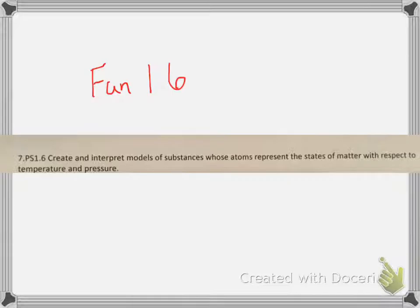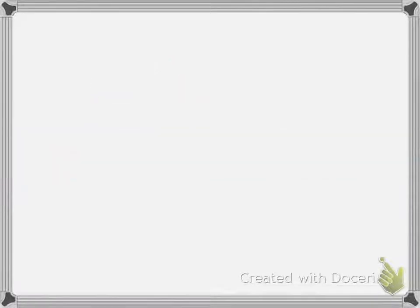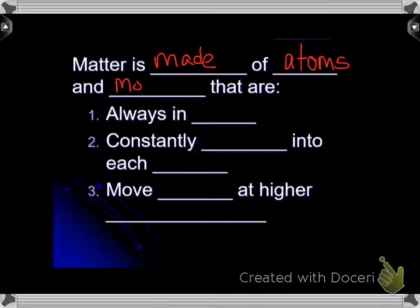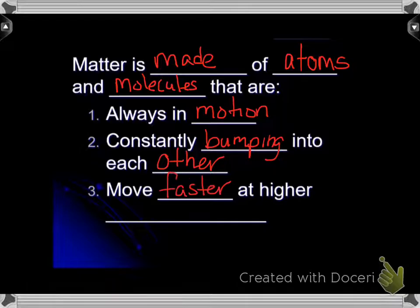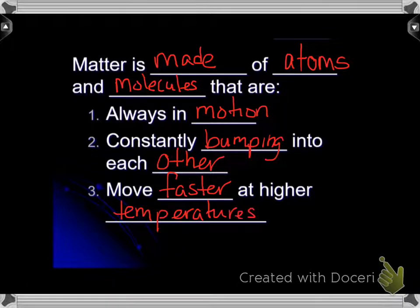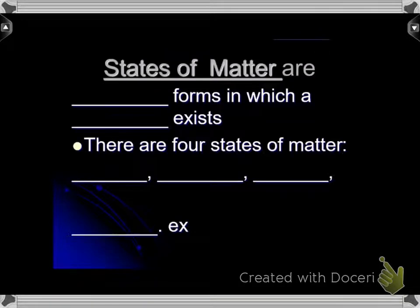This is Fun 1.6. First, we're going to talk about what matter is. Matter is made of atoms and molecules, and atoms and molecules are always in motion. They're constantly bumping into each other and move faster at higher temperatures.